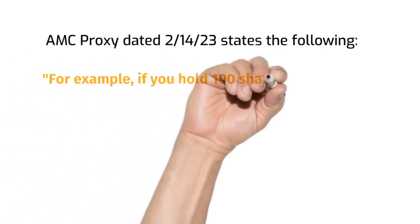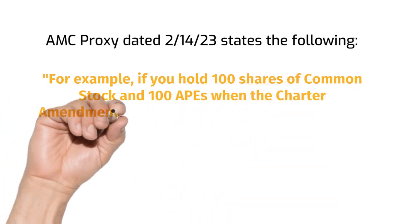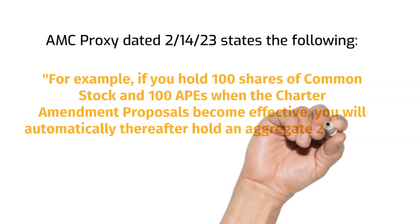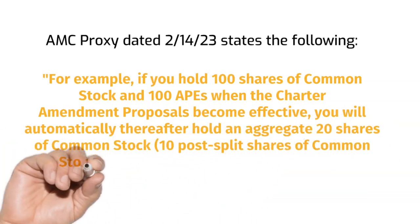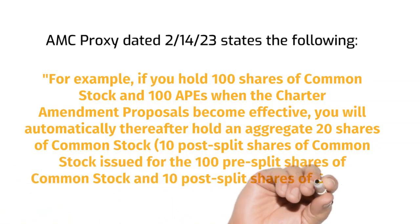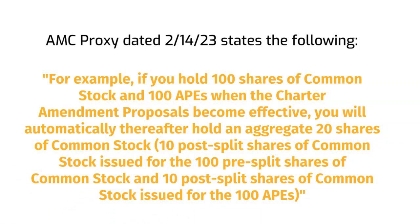The proxy states, and I quote: For example, if you hold 100 shares of common stock and 100 APEs when the charter amendment proposals become effective, you will automatically thereafter hold an aggregate 20 shares of common stock, 10 post-split shares of common stock issued for the 100 pre-split shares of common stock and 10 post-split shares of common stock issued for the 100 APEs. It is the number of shares that you own on the conversion and reverse split date that matters, not the price of any of the stocks. Price is not part of the conversion or reverse split process, only share count.